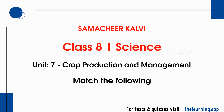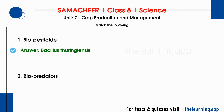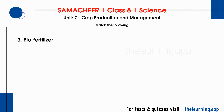Next, match the following. First: biopesticide — correct answer is Bacillus thuringiensis. Second: biopredators — correct answer is control whiteflies. Third: biofertilizer — correct answer is improve soil fertility.